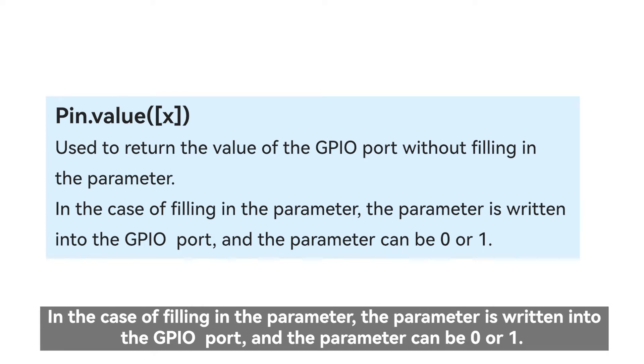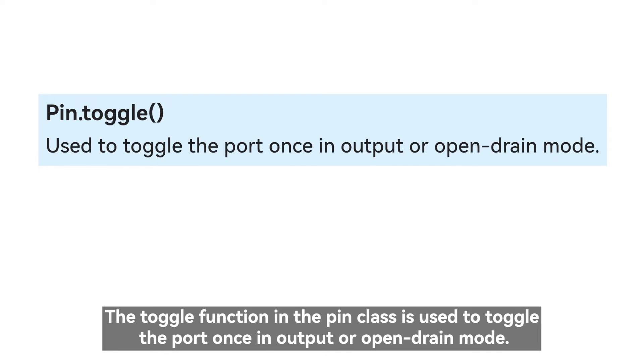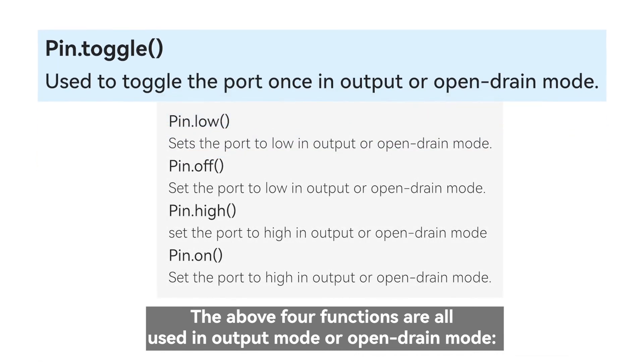In the case of filling in the parameter, the parameter is written into the GPIO port, and the parameter can be 0 or 1. The toggle function in the pin class is used to toggle the port once in output or open drain mode.